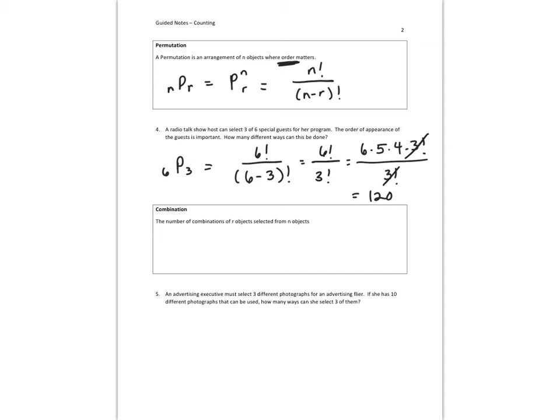Combination, order does not matter. And you can write it as combination n choose r, or nCr. And this will be n factorial over r factorial times n minus r factorial.